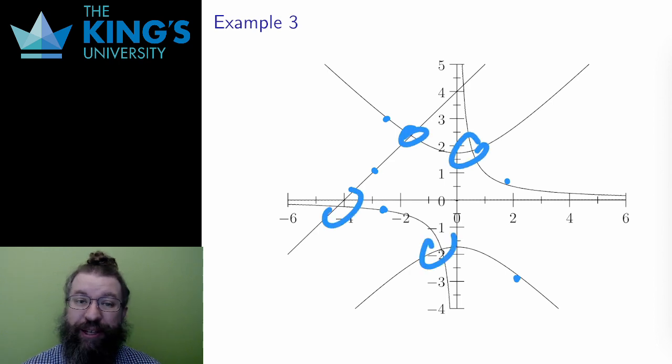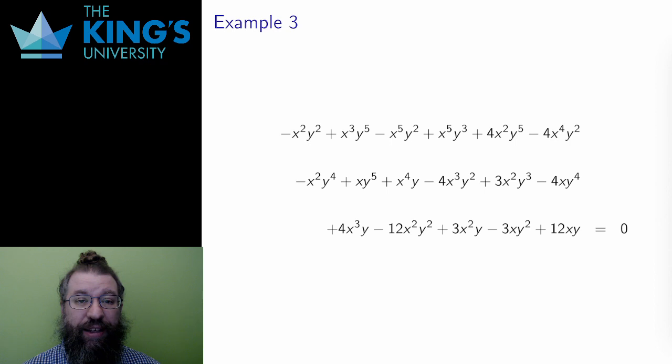Here is the equation of the degree eight algebraic curve from the previous slide. There are two terms, x cubed, y to the five, and x to the five, y cubed, which have exponents which add to eight, and those are the highest degree terms.